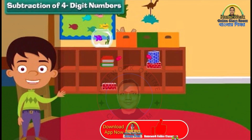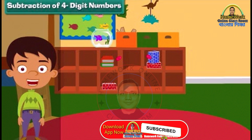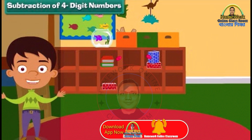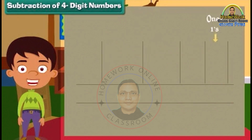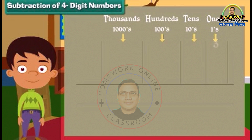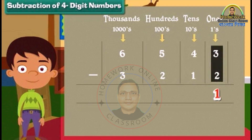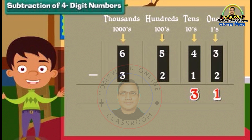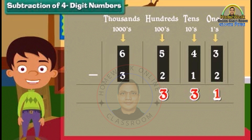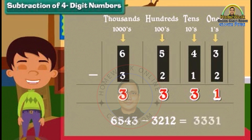Subtraction of four-digit numbers. Ben has now moved to solve subtraction. Let us subtract 3212 from 6543. Write the numbers in the respective columns. We start subtraction from the ones column: 3 minus 2 is equal to 1. Subtract tens: 4 minus 1 is equal to 3. Similarly, subtract hundreds and thousands: 5 minus 2 is 3, and 6 minus 3 is 3. So 6543 minus 3212 is 3331.